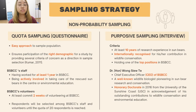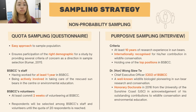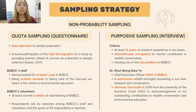The sampling strategy used here is non-probability sampling, which involves quota sampling and also purposive sampling. Quota sampling is used in the questionnaire because it allows easy access to the sample population and ensures the participation of the right demographic for the study, by providing several criteria of concern as a direction in sample selection.